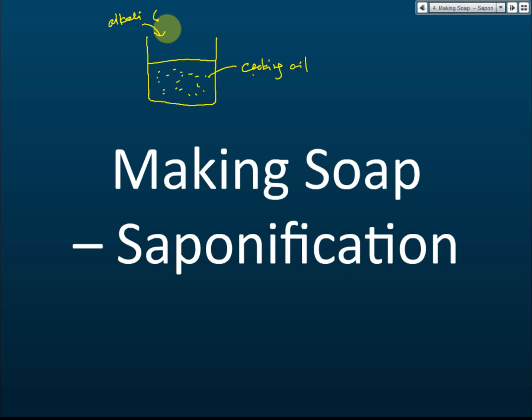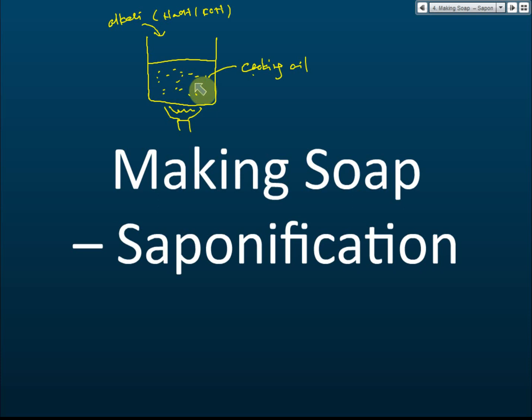The alkali can be sodium hydroxide, potassium hydroxide, or any alkali you can buy from a hardware shop. You add the alkali into the cooking oil, then heat it on a stove and stir it for 20 to 30 minutes. After that, you have soap — but at this stage, the soap is in liquid form.